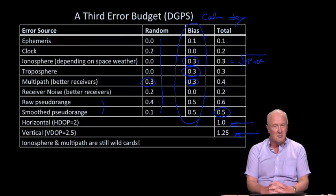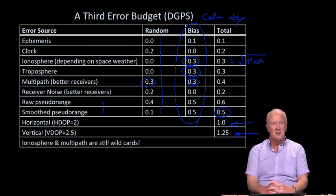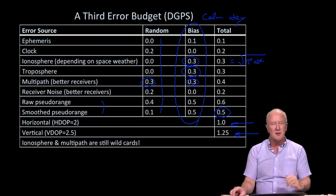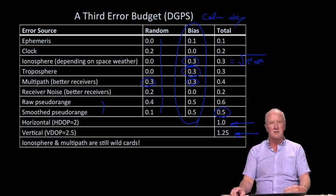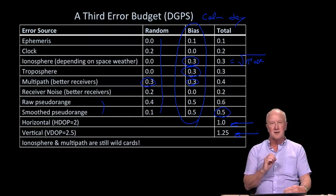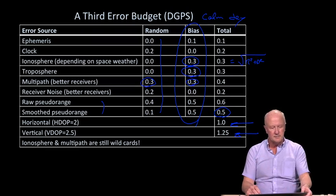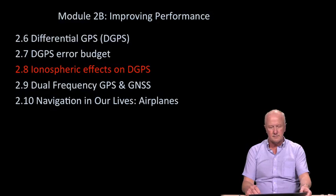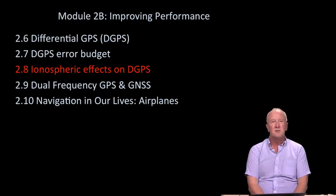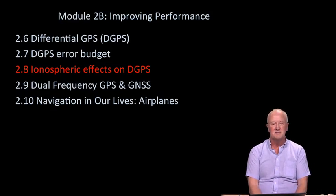When we come back, we'll dig a little more into what happens to the ionospheric row of this table on a day that is not calm in terms of space weather — it will, in fact, be a storm day. We'll talk about the ionospheric effects on differential GPS.